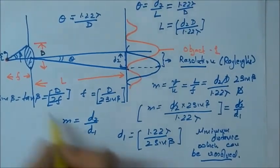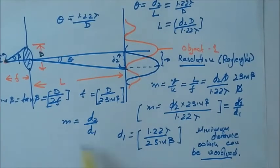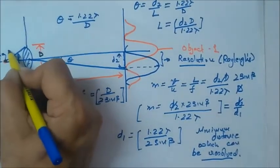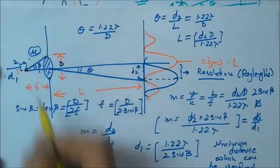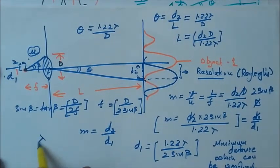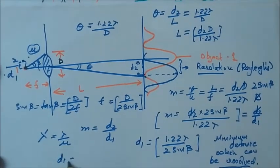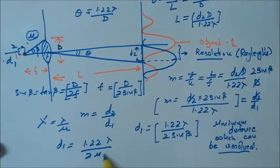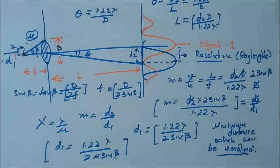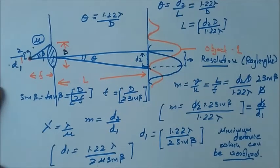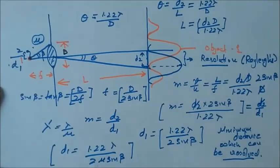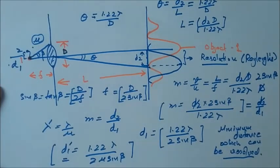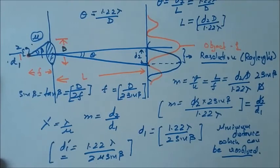If you want to reduce it further, smaller the distance better is the resolution. To improve the resolution, we can place fluid here with refractive index mu. The lambda will then decrease, lambda dash will be lambda upon mu. So D1 will become 1.22 lambda upon twice mu sin beta when we place a liquid there between the object and the lens. This is the revised resolution when the liquid of refractive index mu is placed.